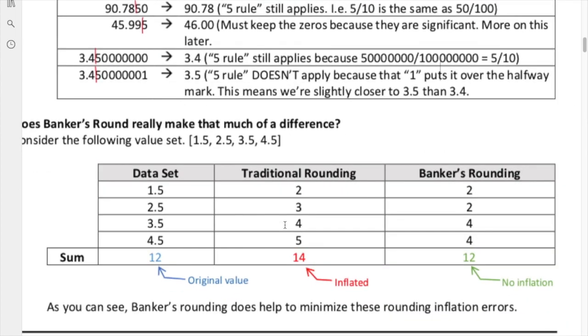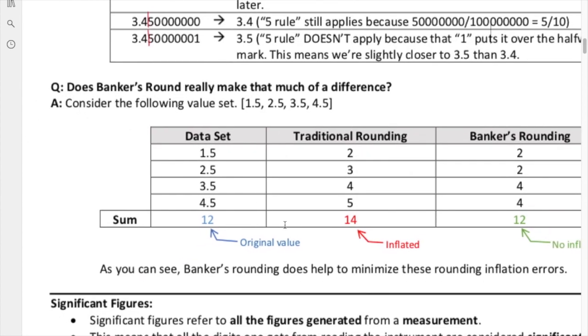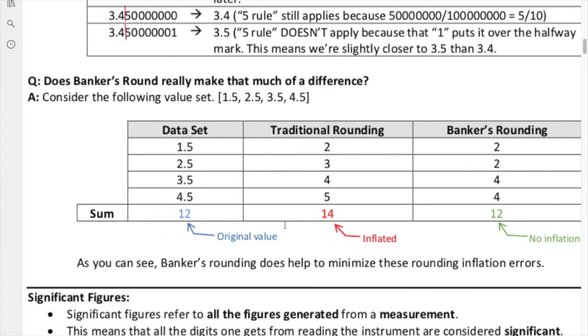The next question is, does this really make that much of a difference in terms of your data? Well, we got an example for you. Let's take the data set 1.5, 2.5, 3.5, 4.5, and we're going to add those numbers up. When we add these numbers up, they add up to 12. That's the original value. Let's take a look when we do traditional rounding. That 1.5 becomes a 2, 2.5 becomes a 3, 3.5 becomes a 4, and 4.5 becomes a 5. This is how we have been taught to do it. When you add those numbers up, we get 14. As you can see, the value is inflated.